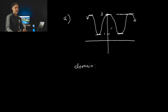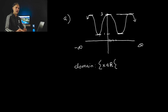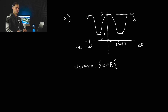Starting off with the domain — if we extend this graph infinitely, basically all of the X values are going to be touched at some point. So the domain is going to be X is an element of all real numbers, from negative infinity to positive infinity. An X value of 0, negative 10, or 5.3217 — all X values are on this graph with no breaks.